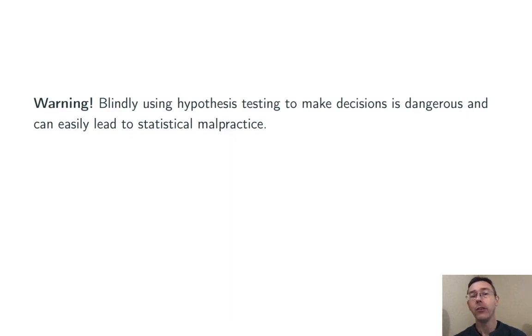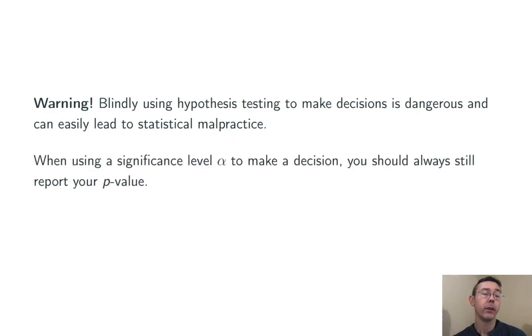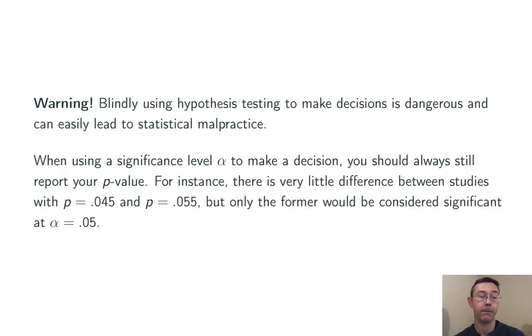In particular, whenever you use a significance level alpha to make a decision, you should always still report your p-value. For instance, there's very little difference between studies with p-values of 0.045 and 0.055, but at significance level alpha equals 0.05, one of those results would have been considered significant, and the other would not.